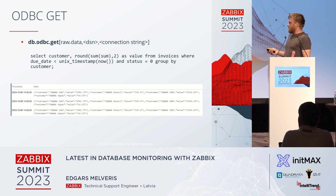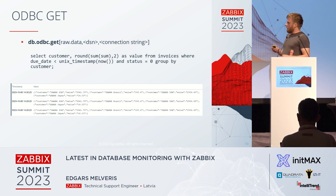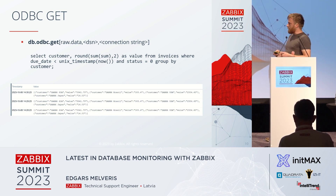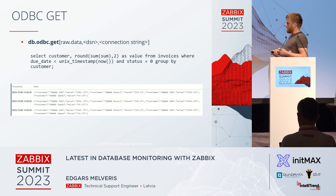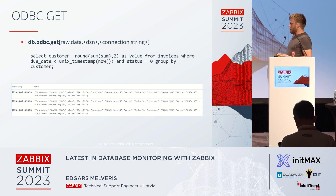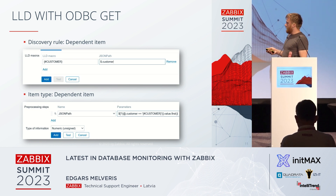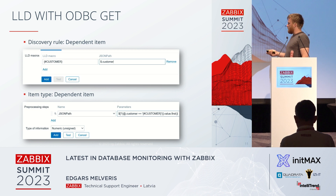The new approach, as introduced in many other places in Zabbix, is to create one item which collects lots of values, and then build dependent items on that. This is now ODBC.get. Create a query that gets information about all the metrics you want, and also return data useful for discoveries. It returns a standard JSON value. From that you can build a dependent discovery rule, define LLD macros from standard JSON path, and item prototypes are also dependent items where you define preprocessing steps to extract one single value, using those same macros in preprocessing.